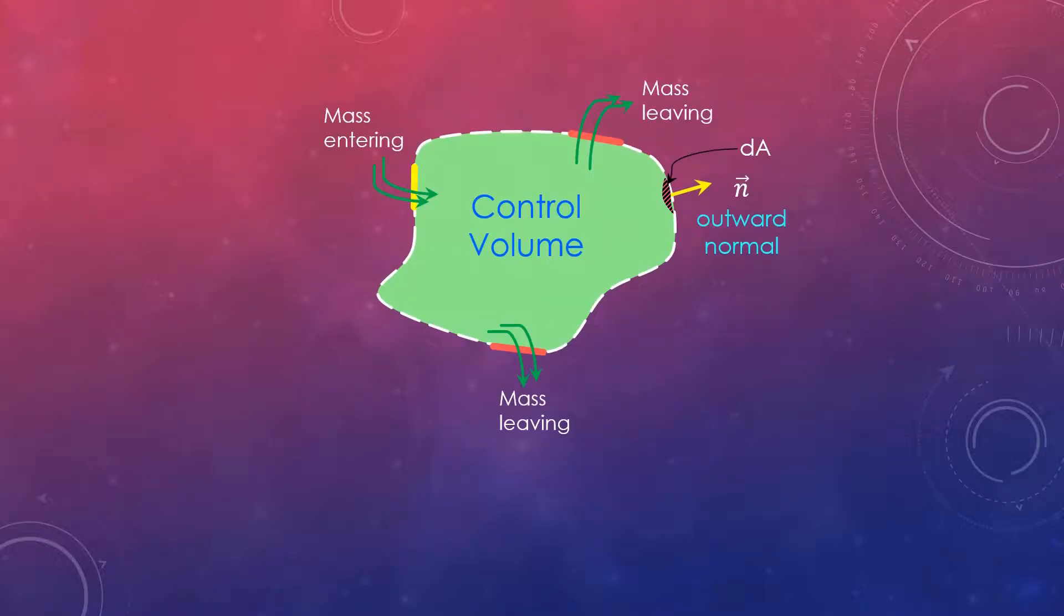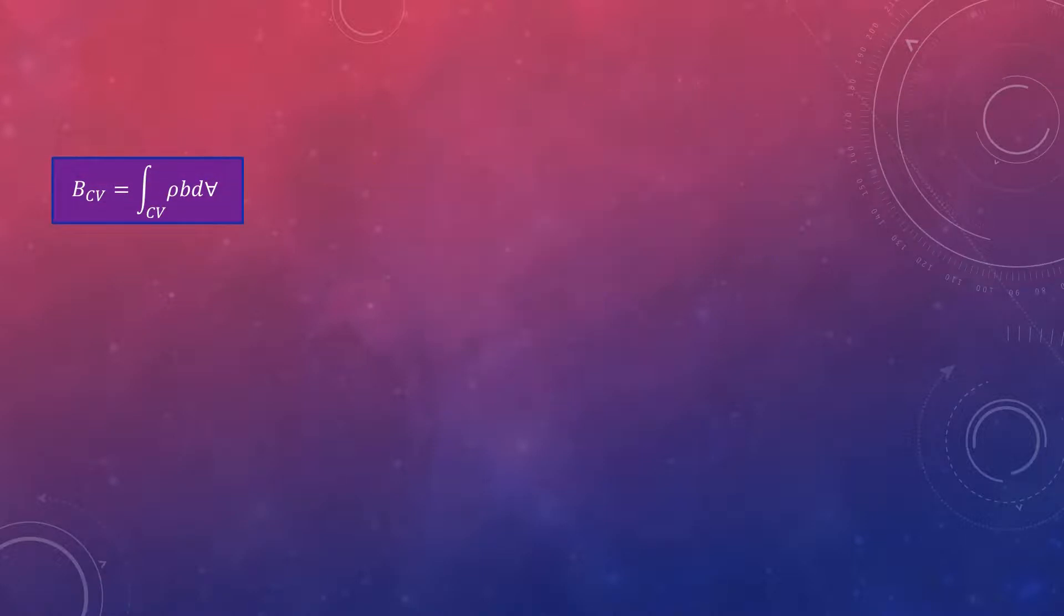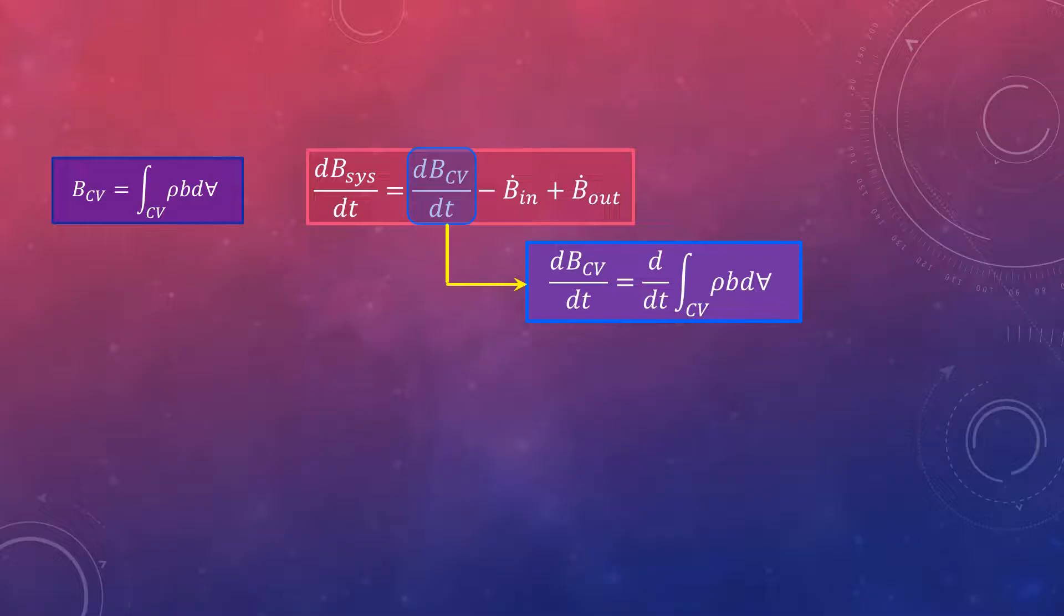The properties within the control volume may vary with position in general. In such a case the total amount of property B within the control volume must be determined by integration. B_CV is equal to integration of the control volume rho*b*dV. The term dB_CV/dt in this equation is thus equal to d/dt of integral_CV rho*b*dV and represents the time rate of change of property B content of the control volume.